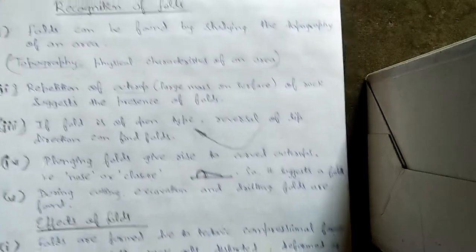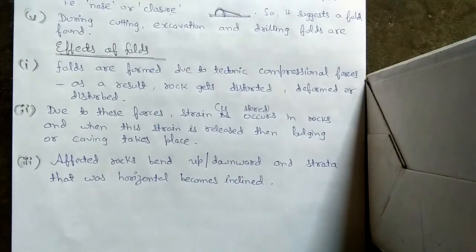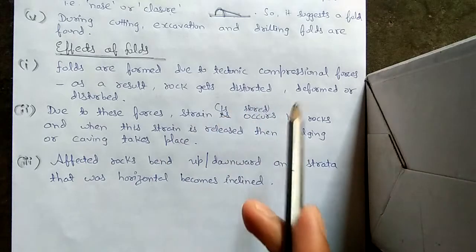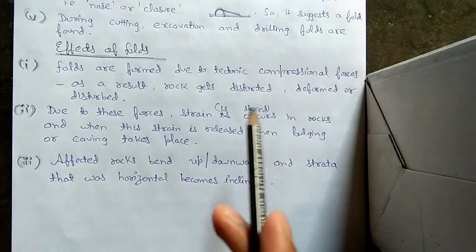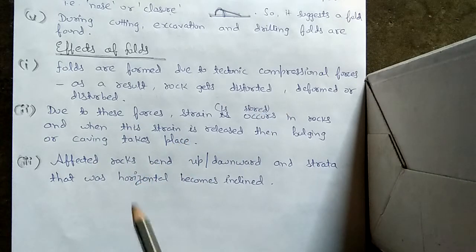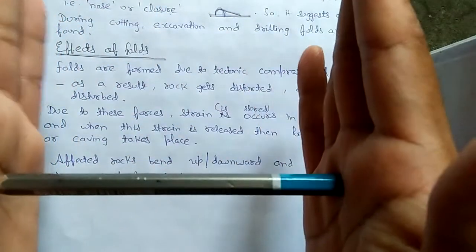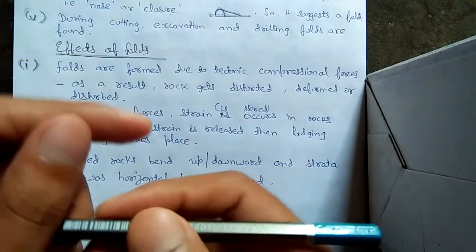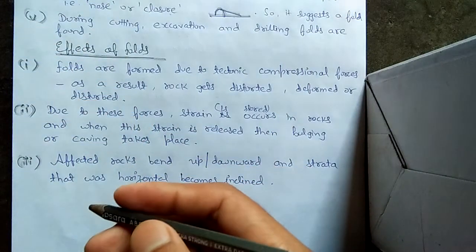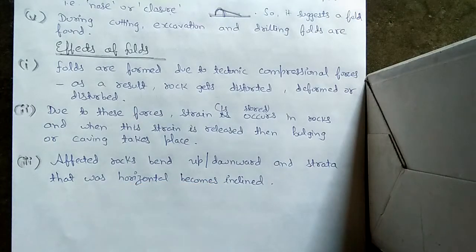Now what are the effects of folds? The first effect of fold is folds are formed due to tectonic compressional forces. I had explained in former videos that when we compress - this is a rock layer and we compress it from both sides - then folds are formed. Tectonic means when the forces are produced by tectonic plates, these forces are called tectonic compressional forces.